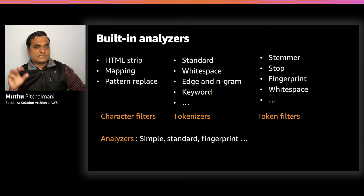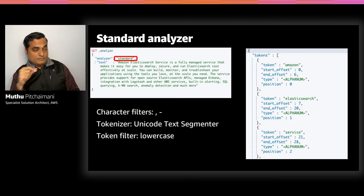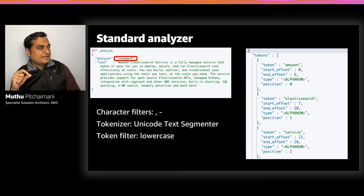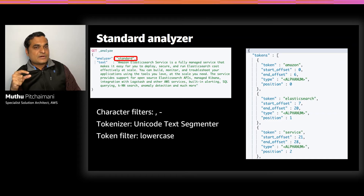Let's look at an example of how Elasticsearch converts text into tokens. On the left-hand side you see a stream of text, and we are going to analyze this using the standard analyzer. On the right-hand side you see the tokens — that text has been broken into tokens and stored into an index along with its offsets and position. In this example, the standard analyzer's character filter removes punctuation like commas, periods, or hyphens. Then the tokenizer, called Unicode Text Segmentation, breaks the stream into words at word boundaries. Finally, the lowercase token filter changes all tokens to lowercase and stores them in the index.